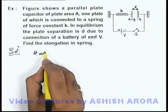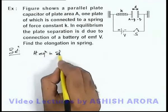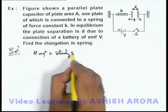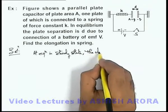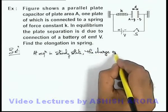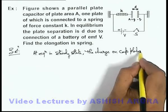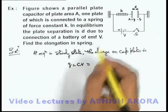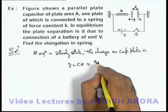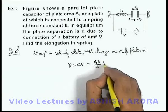At equilibrium, in steady state, we can easily write down the charge on capacitor plates. This charge can be written as CV, and the capacitance we know is epsilon not A by d, multiplied by V.